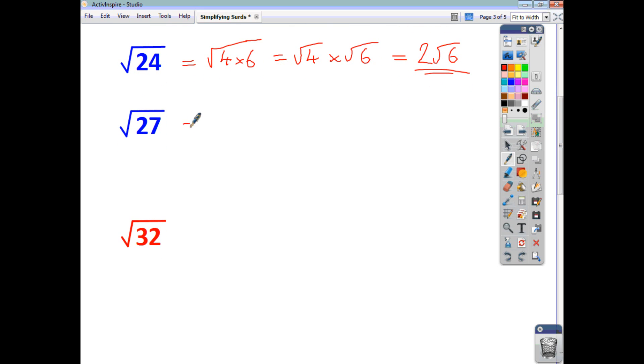How about root 27? Well, we know that 9 is a factor of 27. And you can write that as root 9 times 3. So that's root 9 times root 3. Root 9 is 3 so we write it as 3 root 3. And that's our final answer.